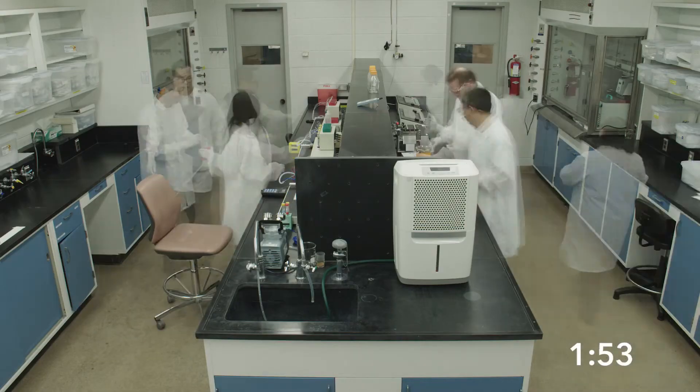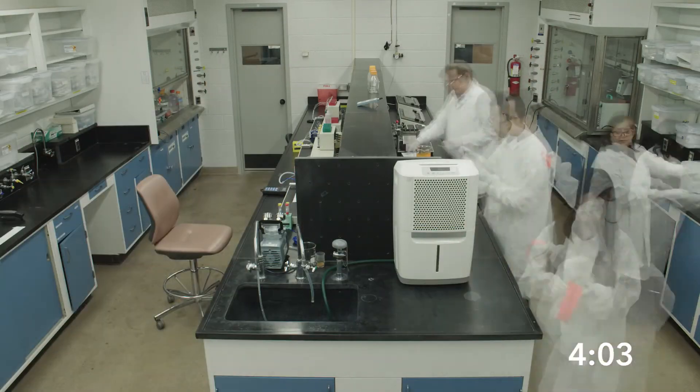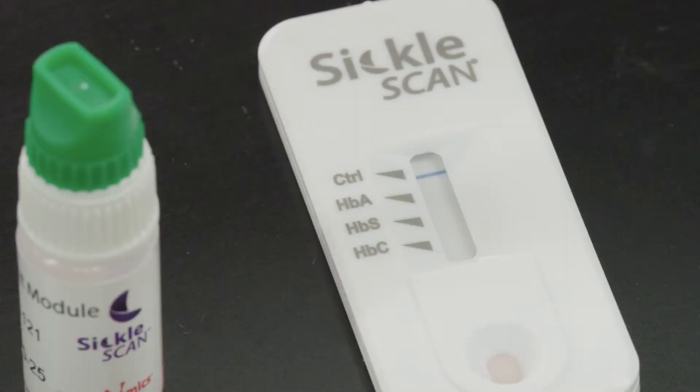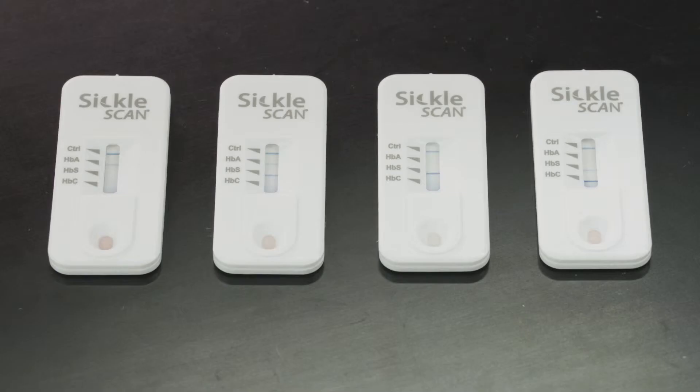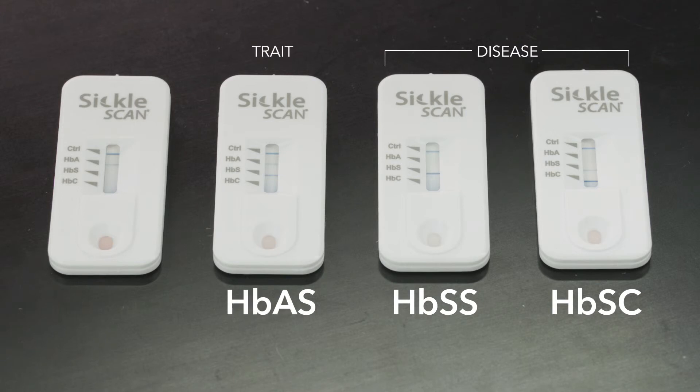Allow the test to process for five minutes. If a dark blue control line appears, the test has processed correctly. The preceding three lines on the device will indicate whether hemoglobin A, hemoglobin S, or hemoglobin C are found within the sample. The presence and combination of these indicators reveals the sample's hemoglobin pattern and aids in diagnosis.